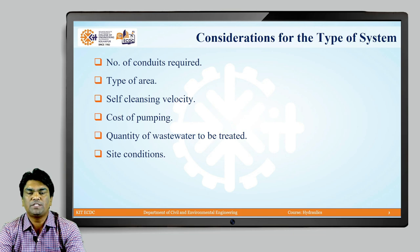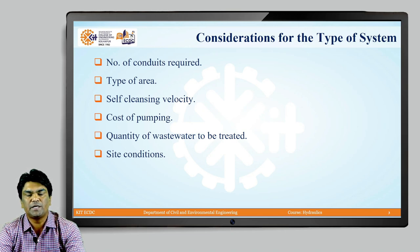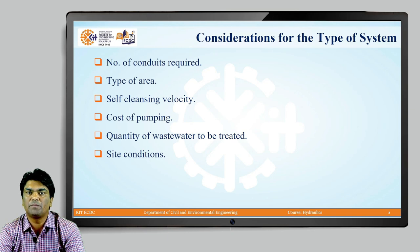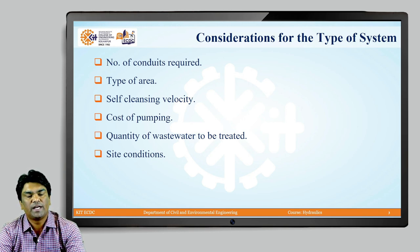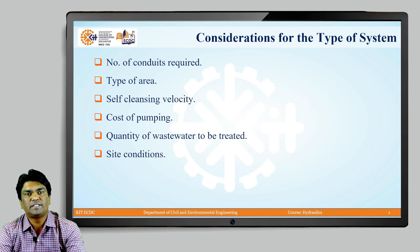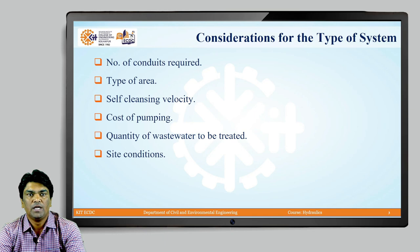First, let us discuss some of the considerations for the selection of type of system. Earlier we studied three types of sewage systems: separate system, combined system, and partially separate system. In the separate system, two types of conduits are required — one to collect sanitary sewage from residential and industrial areas, and the second to collect storm water from roofs and streets. In the combined sewer, a single conduit combines sanitary sewage and storm water. In the partially separate system, sanitary sewage and part of the storm water are collected in a single sewer, with a separate sewer for the rest of the storm water. The number of conduits plays a very important role in deciding the type of system.